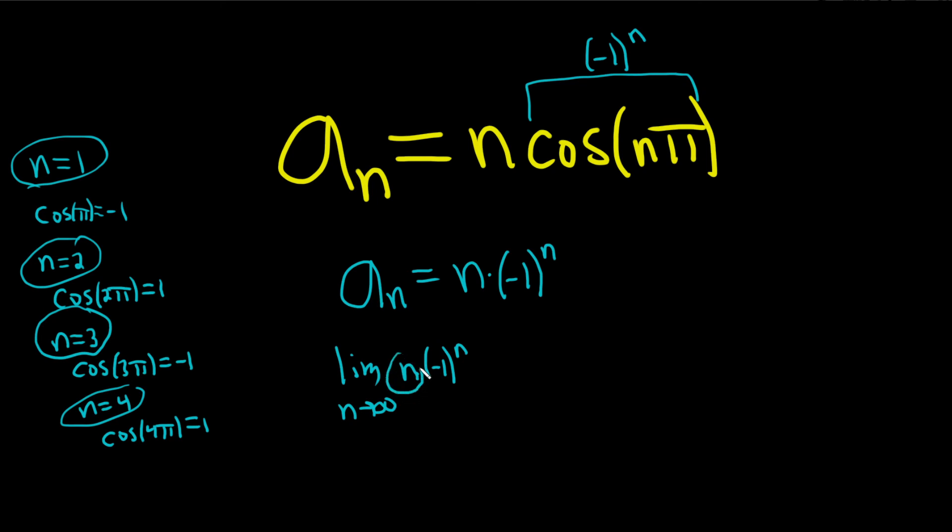So as n approaches infinity, n approaches infinity. And this piece oscillates back and forth. So this quantity is not approaching anything. So this limit does not exist. Therefore, the sequence diverges.